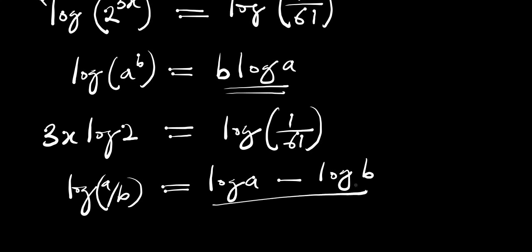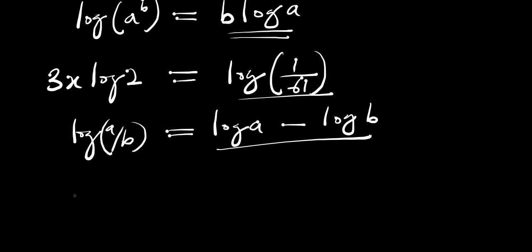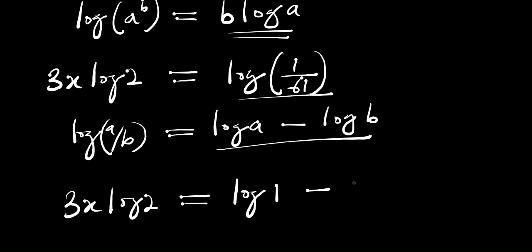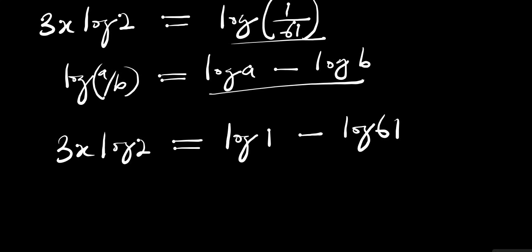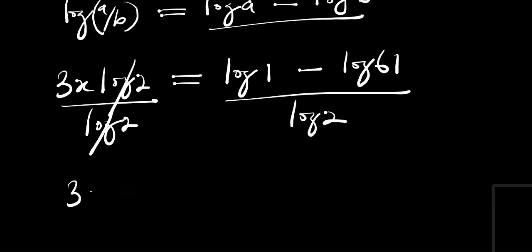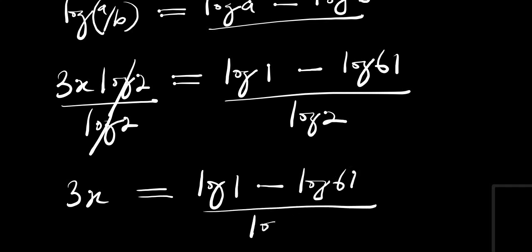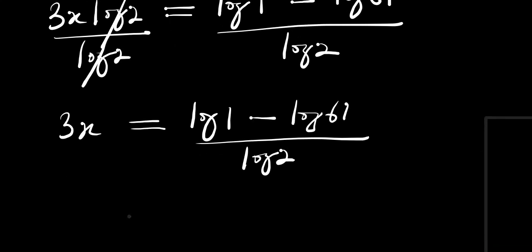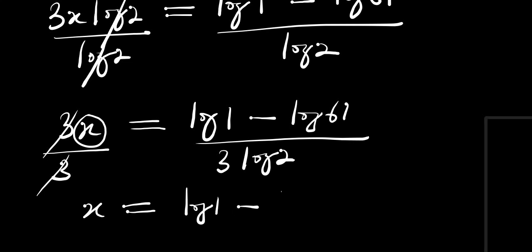...we apply this identity and get 3x times log of 2 equals log of 1 minus log of 61. From here we divide each part of the equation by log of 2 — log of 2 cancels log of 2 — giving us 3x equals (log of 1 minus log of 61) divided by log of 2. To solve for x we divide again by 3, so x equals (log of 1 minus log of 61) divided by 3 times log of 2.